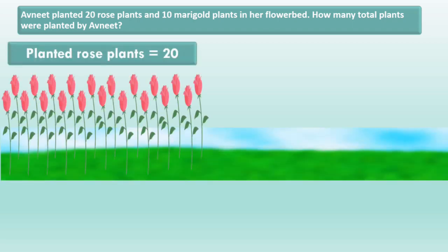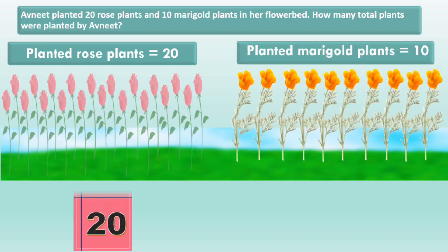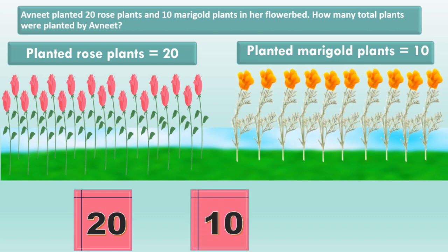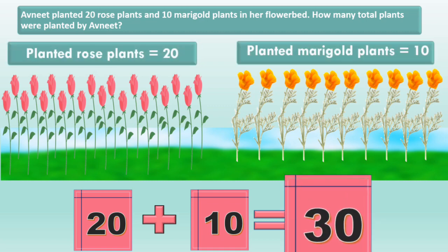Number of rose plants is 20. Number of marigold plants is equal to 10. So we will add 20 and 10. 20 plus 10 is equal to 30. Here number of rose plants is 20 and the number of marigold plants is 10. So, 30 plants were planted by Avneet.